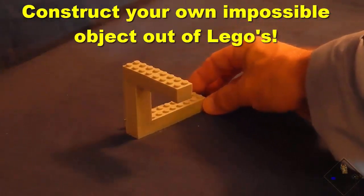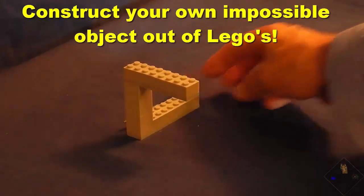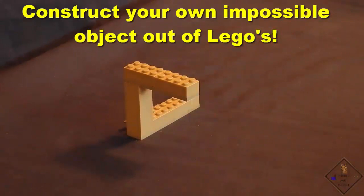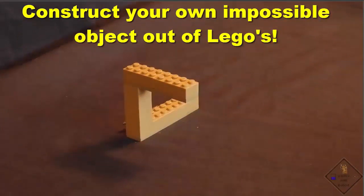When you look at the Lego structure from just the right view, your brain sees an impossible object, a Penrose Triangle.